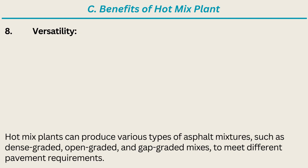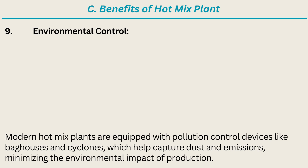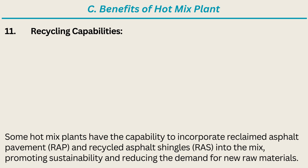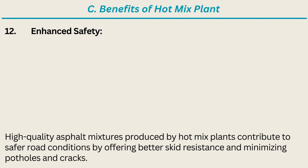Eight, versatility — hot mix plants can produce various types of asphalt mixtures, such as dense graded, open graded, and gap graded mixes, to meet different pavement requirements. Nine, environmental control — modern hot mix plants are equipped with pollution control devices like bag houses and cyclones, which help capture dust and emissions, minimizing the environmental impact of production. Ten, adaptability to varied conditions — hot mix plants can operate in diverse climatic conditions, allowing for year-round production regardless of weather. Eleven, recycling capabilities — some hot mix plants can incorporate reclaimed asphalt pavement (RAP) and recycled asphalt shingles (RAS) into the mix, promoting sustainability and reducing demand for new raw materials. Twelve, enhanced safety — high-quality asphalt mixtures contribute to safer road conditions by offering better skid resistance and minimizing potholes and cracks.